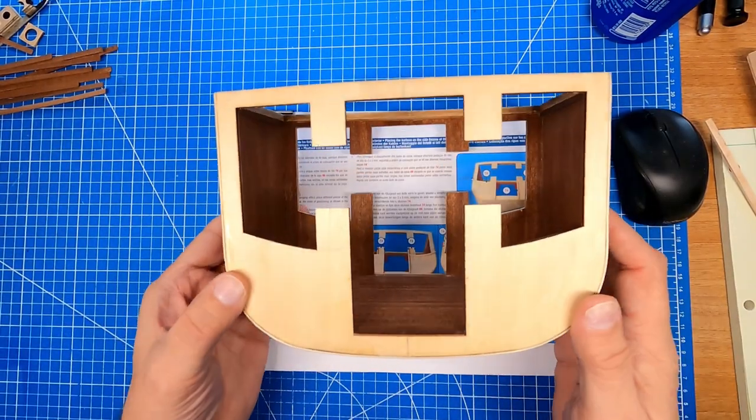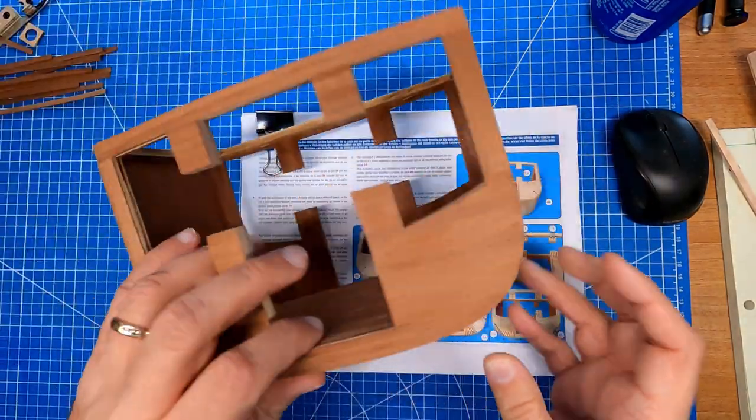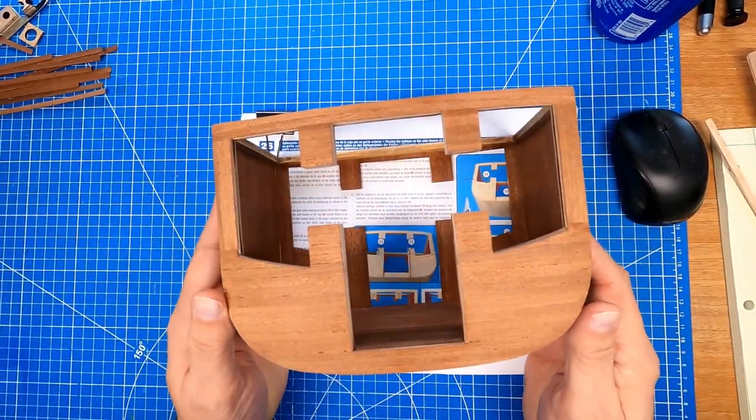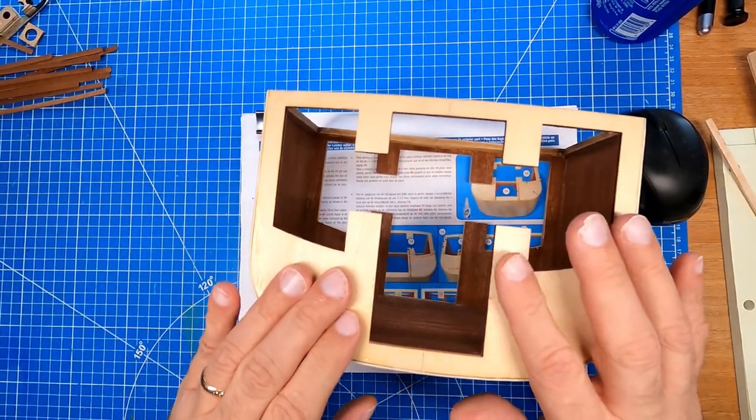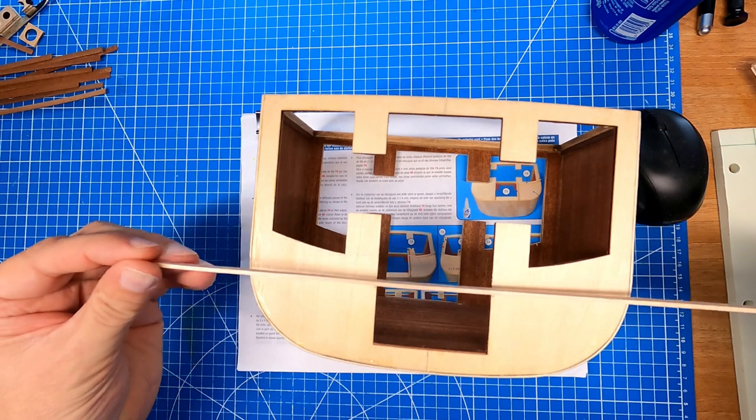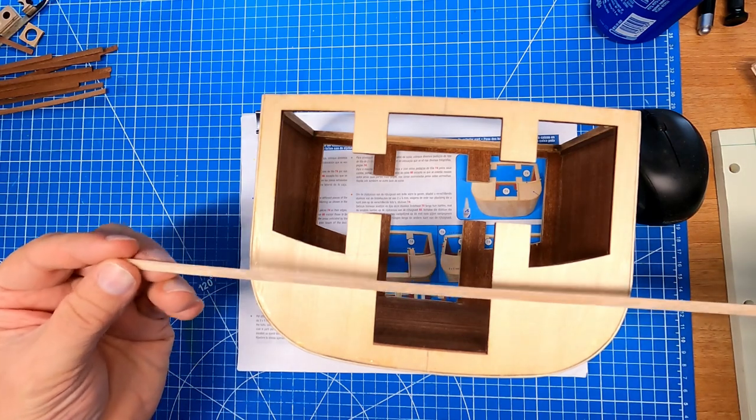This time on the stagecoach, we need to make this side look like this side. To do that, the first thing we need to do is make this side thicker using the strips provided that are 2mm by 5mm.